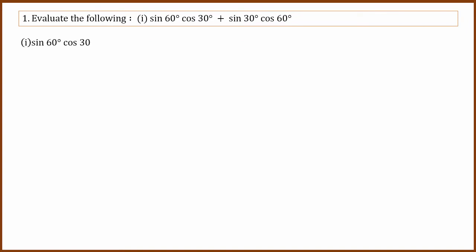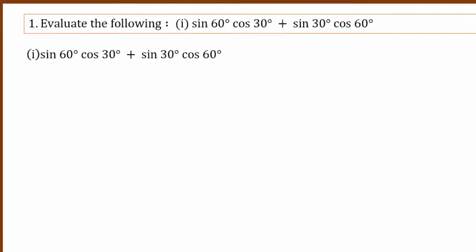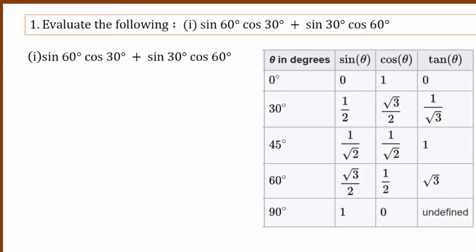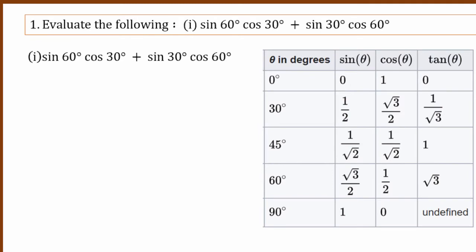The first question is: sin 60 degrees times cos 30 degrees, plus sin 30 degrees times cos 60 degrees. We will use the table to solve the problem.